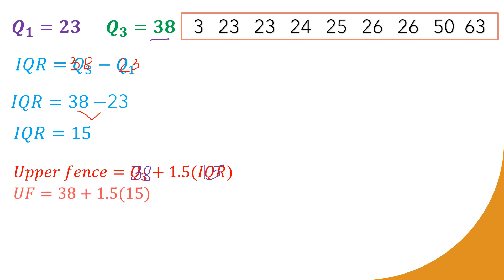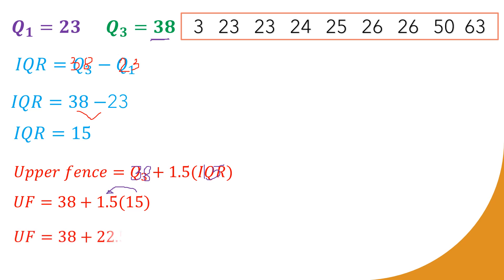Writing it clearly: 38 + 1.5 × 15. Multiplying 15 × 1.5 gives 22.5. Adding 38 + 22.5, therefore our upper fence is 60.5. That is in between 50 and 63 on our data set, so the upper fence is placed there.